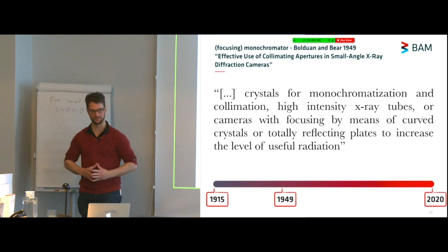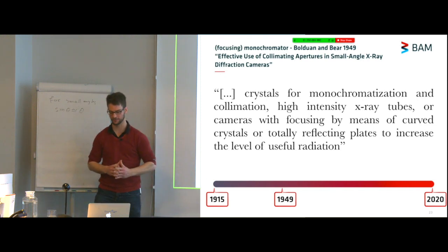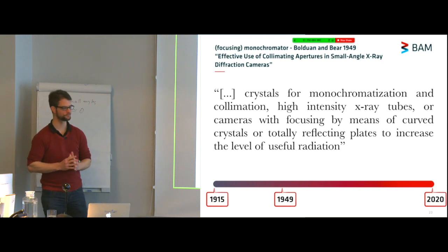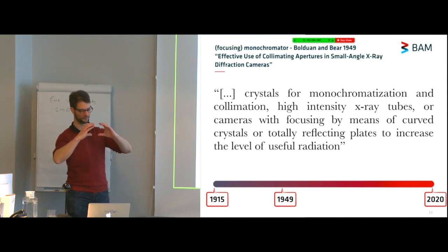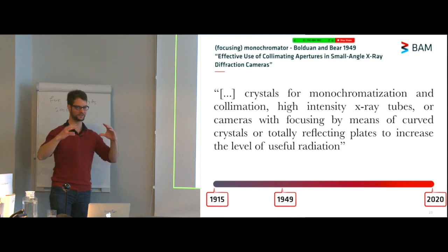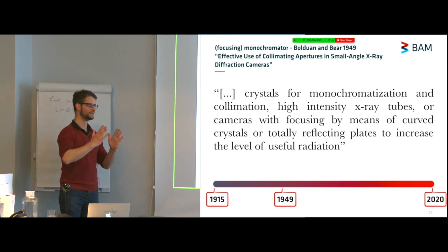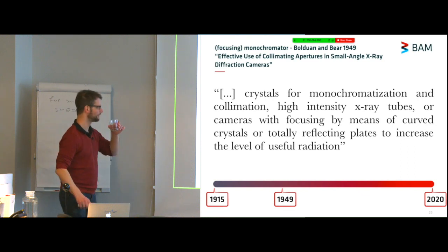This is not self-explanatory as I found out, in particular the focusing by means of curved crystals. I came across an instrument where they wanted to focus the X-rays and what they had done was taken a block of silicon and cut out a parabolic shape out of that block. This does nothing for your focusing because the crystalline lattice is actually exactly the same. So the X-rays don't bend, they're not reflected to different angles, they're reflected to exactly the same angle. Apparently not all lessons from the past are remembered.